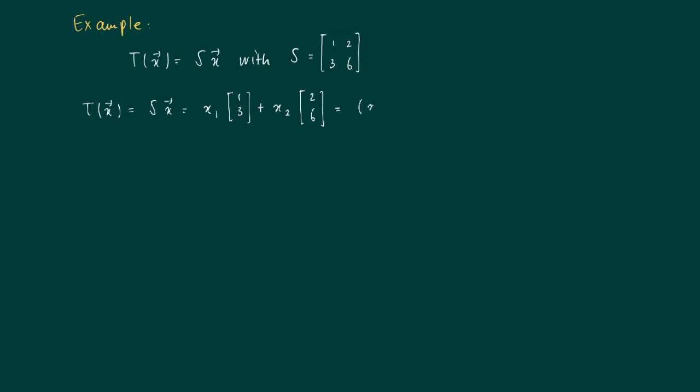Well, [2, 6] is 2 times the column [1, 3], so actually what is written here is (X1 + 2X2) times [1, 3].